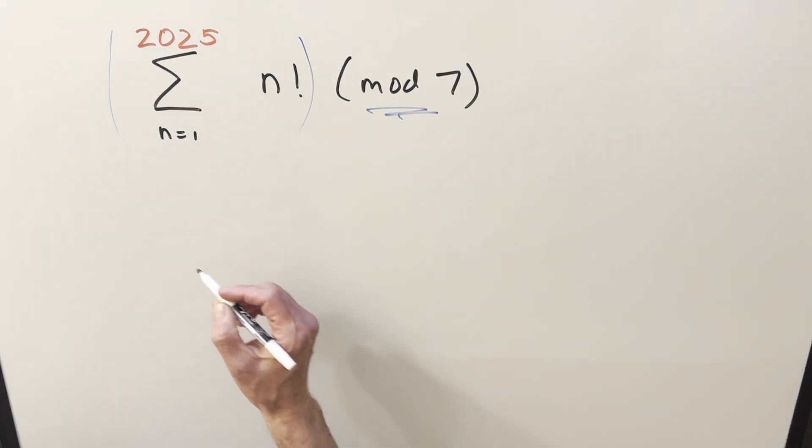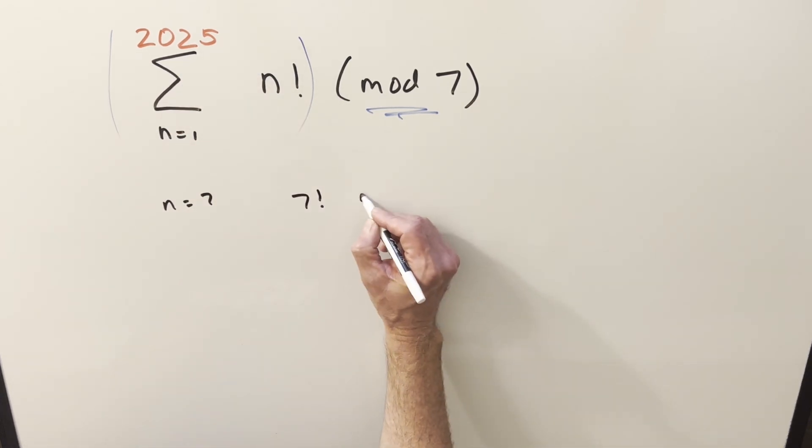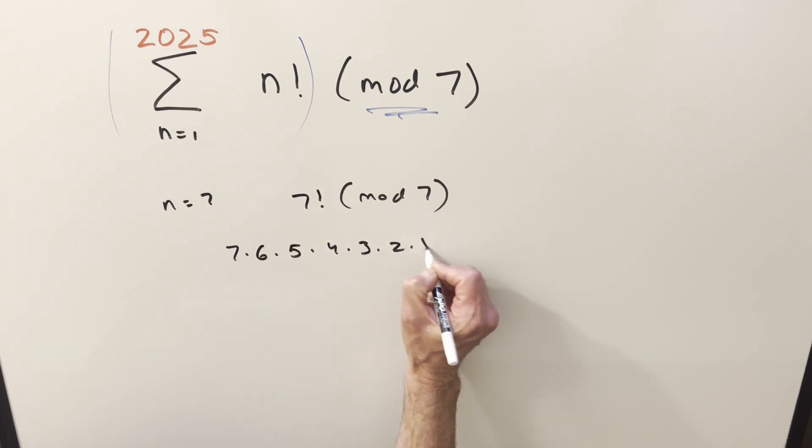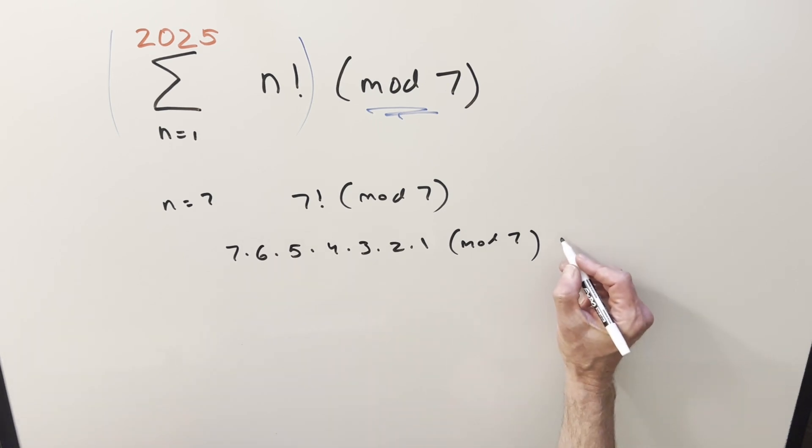We can start to just look at some of the bigger terms at first. So like let's just say pretend n is 7 just for one of these terms. So if we look at 7 factorial mod 7 and we break that up, 7 factorial is just this thing. But then what happens when we divide mod 7 into 7 factorial? Well it divides exactly. So this value is going to be congruent to 0.